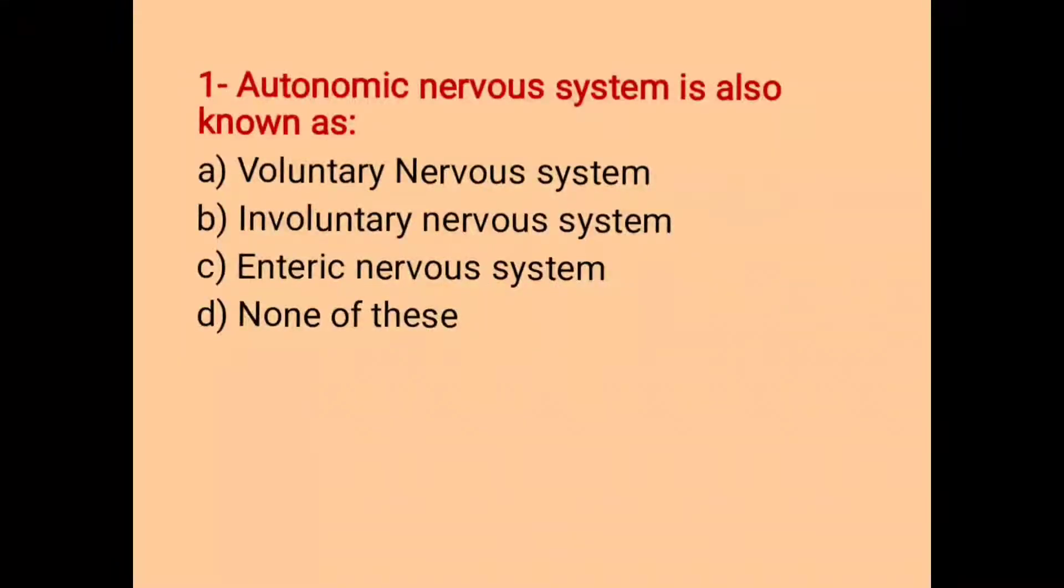Next is our question number 1. Autonomic Nervous System is also known as ANS, which we give another name: Voluntary Nervous System, Involuntary Nervous System, Enteric Nervous System or none of these. So, the correct option is B, Involuntary Nervous System.